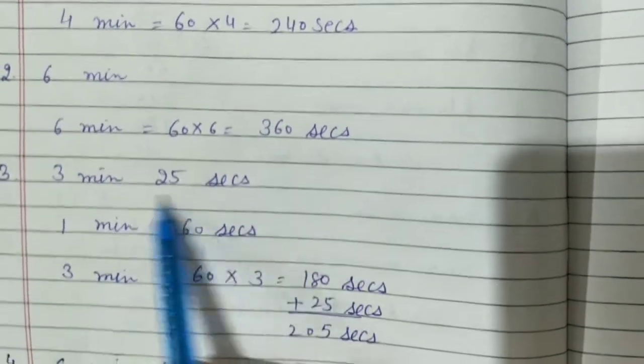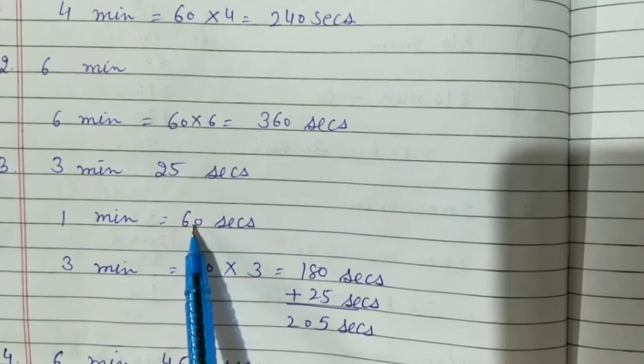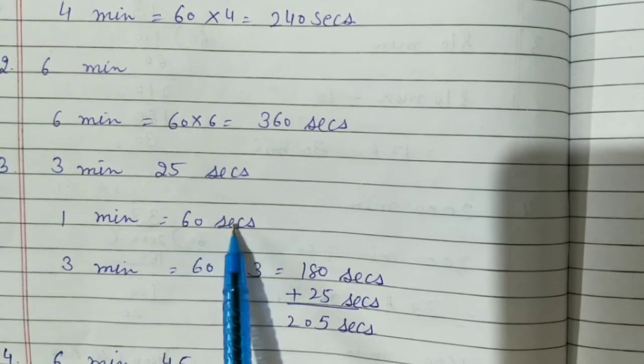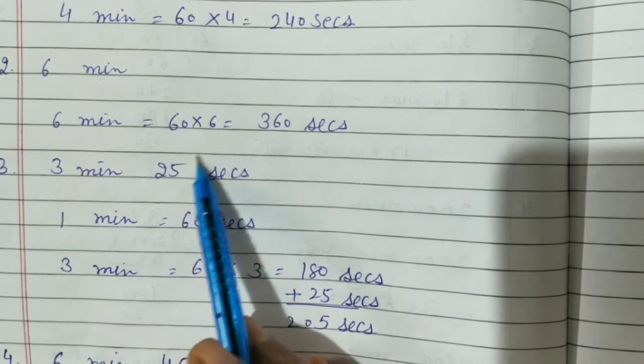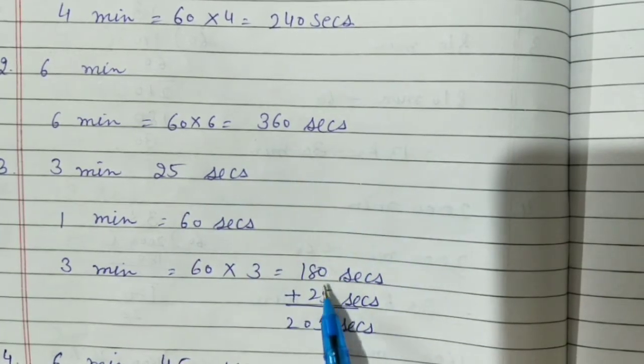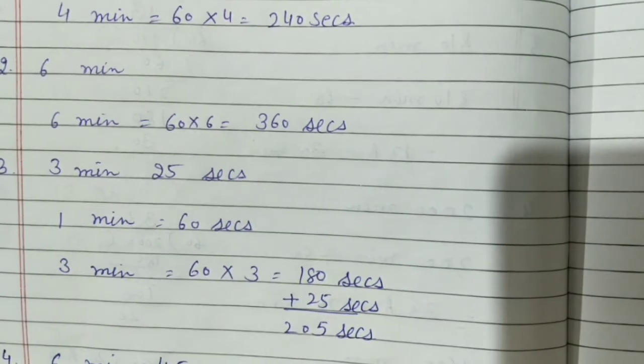Question number 3, 3 minutes 25 seconds. In 1 minute there are 60 seconds. In 3 minutes, 180 seconds. 25 seconds is already there. So add 25 in it. The answer is 205 seconds.